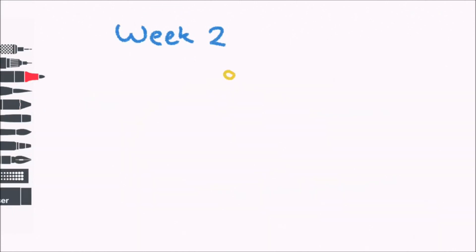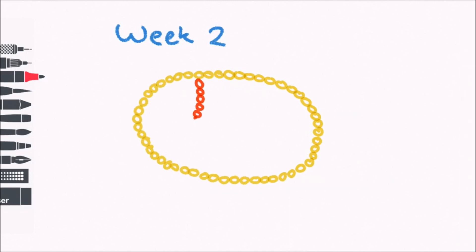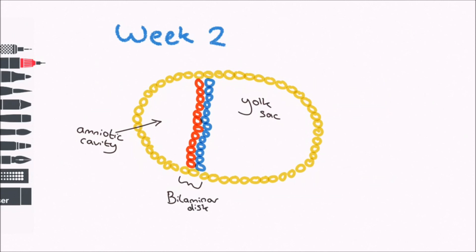So what now? Well, in the second week, a second cavity forms between the epiblast and the trophoblasts. This is called the amniotic cavity, and the other cavity is now called the yolk sac. The result is the formation of a disc, sandwiched between two cavities. This disc is called the bilaminar disc, as it has two layers, the epiblast and the hypoblast.